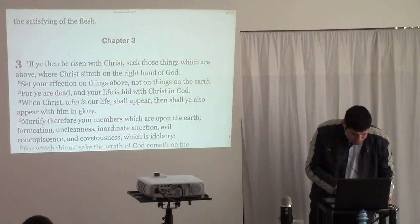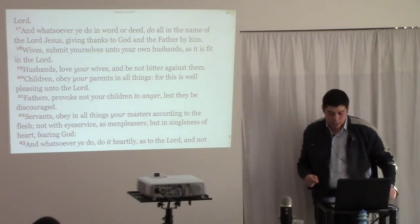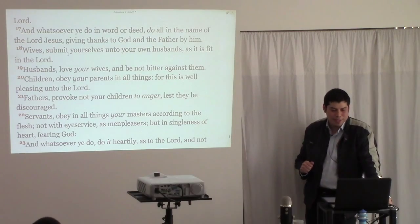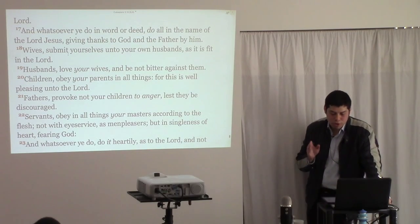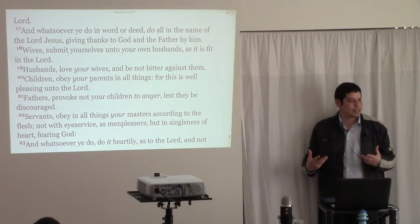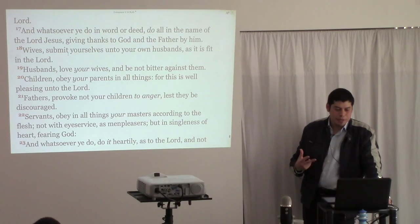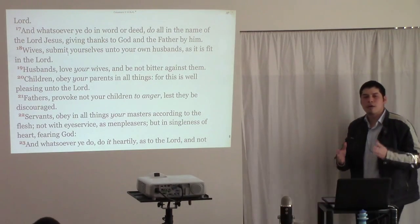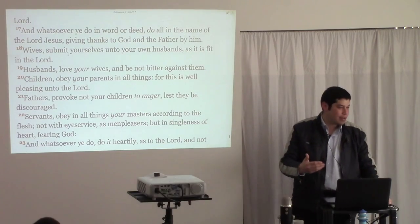Colossians 3:20 says, 'Children, obey your parents in all things, for this is well and pleasing unto the Lord.' Children, obey your parents in all things. The benefits of setting rules: number one, it teaches your child obedience. If you don't have rules, how are they going to learn how to obey? Rules are necessary for them to learn obedience. Secondly, their obedience pleases the Lord. I would want nothing more than for God to look down on my children and say, 'Those children please me.'